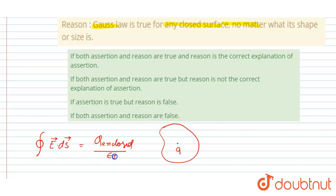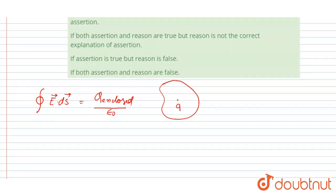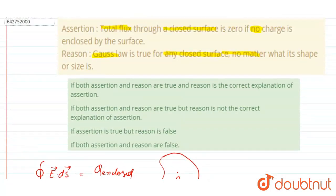by epsilon naught. Simple. Now E.dS for this surface, if you see, will be equals to, that is the flux, that will be equals to the net charge enclosed divided by epsilon naught. Now you can see the statement again.